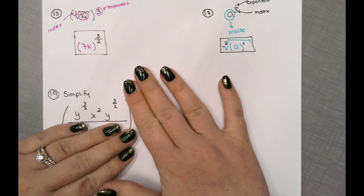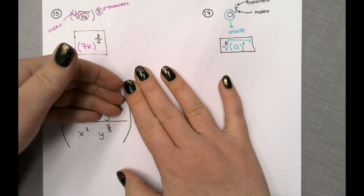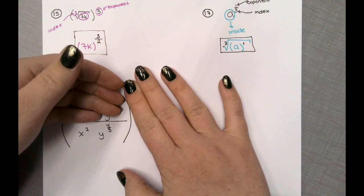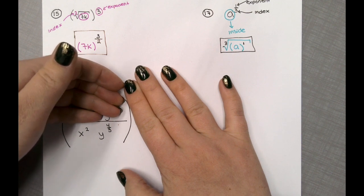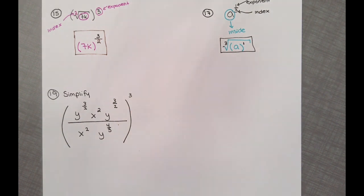You can start wherever you'd like — simplifying the numerator first, or simplifying the denominator first. With this example there's not much to simplify in the denominator. You can also start by bringing in that outer exponent of 3 using the power of a power property. The only thing I would say is: do not deal with negatives until the very last step. If you need to take reciprocals, do that last.